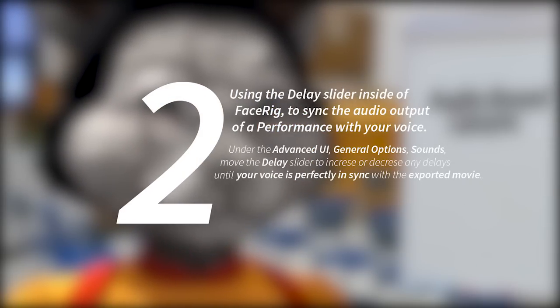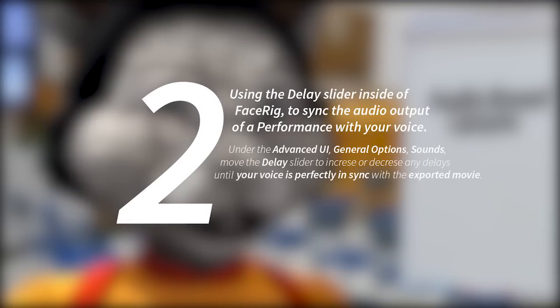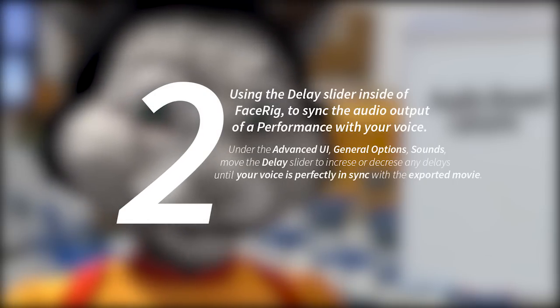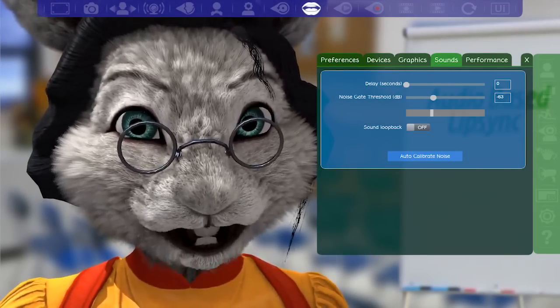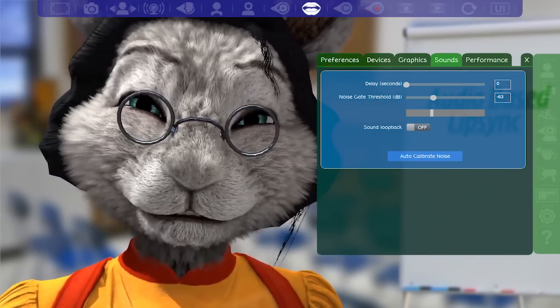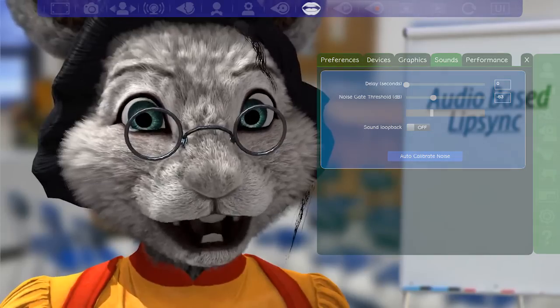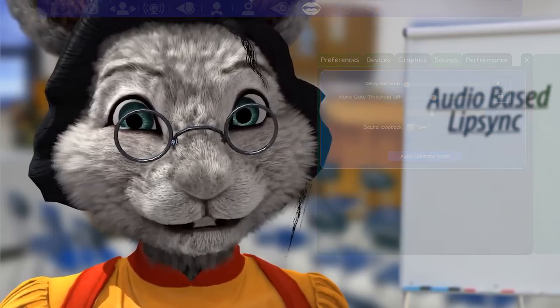Disabling them should lower the amount of delay significantly. If that is not enough, you should use the delay slider inside of FaceRig. The sound delay slider makes sure that the audio output from the movie clips you create will be in sync with the avatar. Just keep talking and move the slider until it seems perfectly in sync. It's mostly a trial and error process.